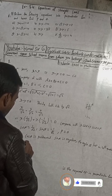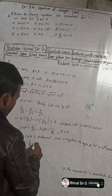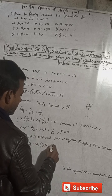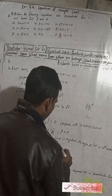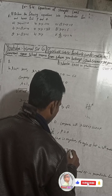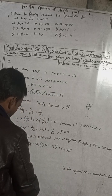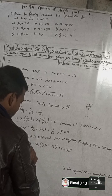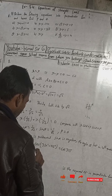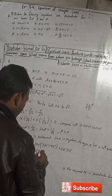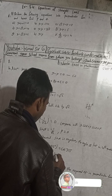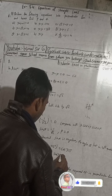Since cos α equals 1/√2 and we are in the fourth quadrant, that means α = 360° − 45° = 315°. So cos α = cos 315°. Similarly, sin α = −1/√2 = sin(360° − 45°) = sin 315°.